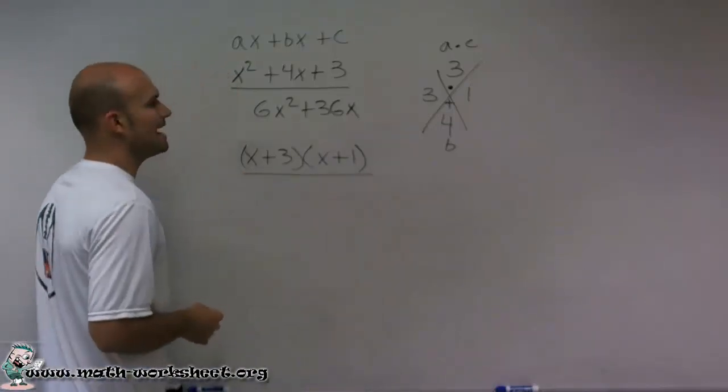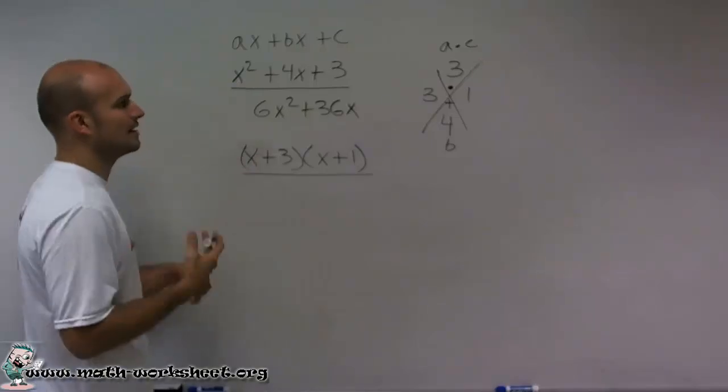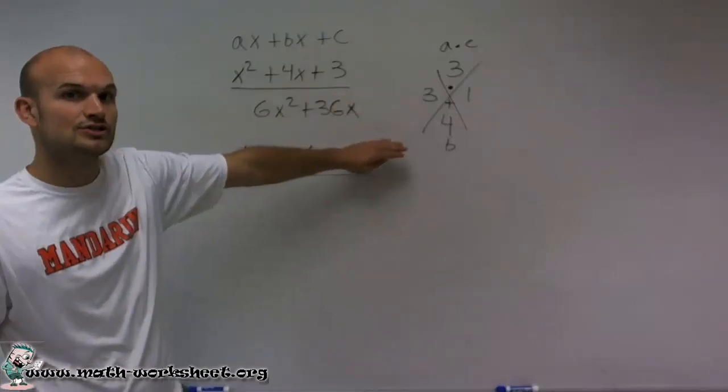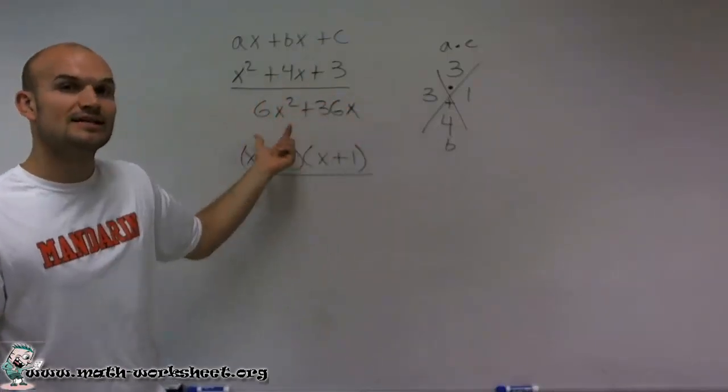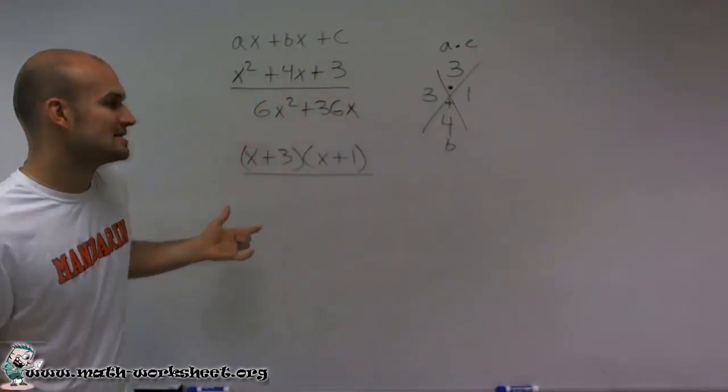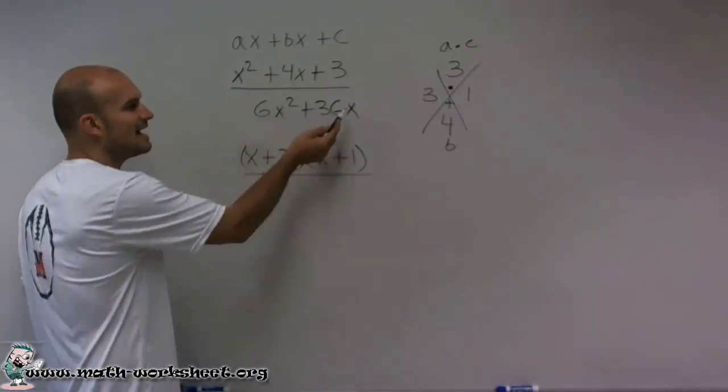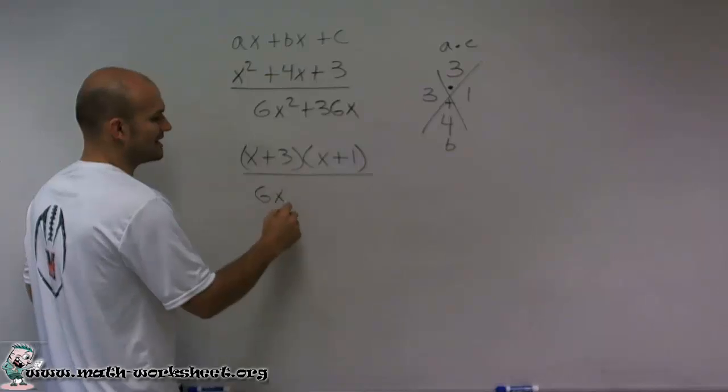Then I take a look at the bottom. And I look at this bottom. I say, all right, again, what is it they have in common? Now, before I even go into factoring, which I could do, I say, is there something they share? Can I factor something else out? And what you notice is they both share a 6 and a x.